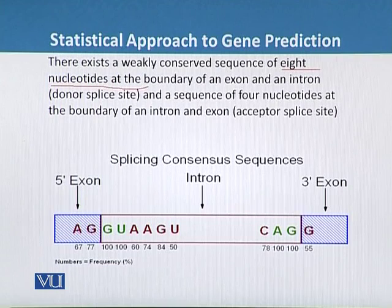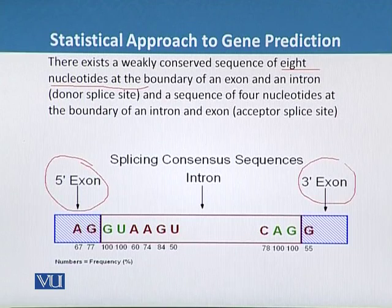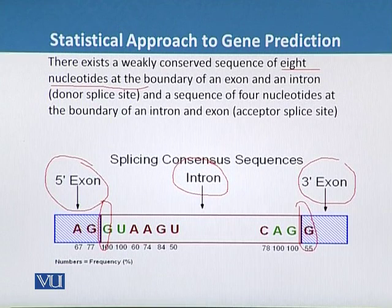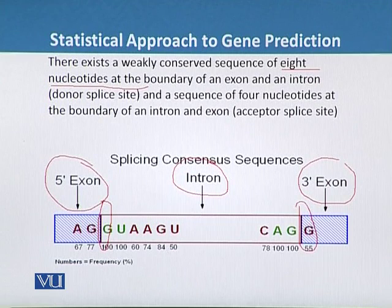We can see in this diagram that there are two exons and one intron. At the boundary of the exon-intron we have a conserved sequence of eight nucleotides at the donor splice site, and a sequence of four nucleotides at the boundary of an intron-exon acceptor splice site.